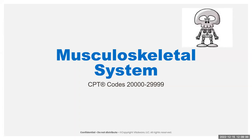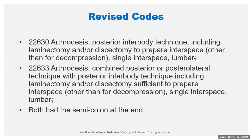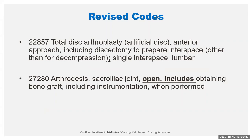For the revised codes, we've got your arthrodesis code — your posterior inner body technique. Both of them had a semicolon at the end, and that's being removed. There are some changes within this because it's going to affect how some of the codes are used. We have your 22857 — this one is now adding the semicolon and adding that single inner space for lumbar. The 22857 is becoming a parent code.